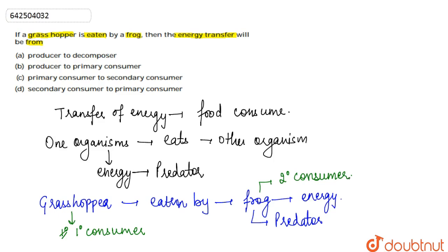The energy transfer is taking place from the primary consumer to the secondary consumer. Hence the correct answer is option C — from primary consumer to the secondary consumer.